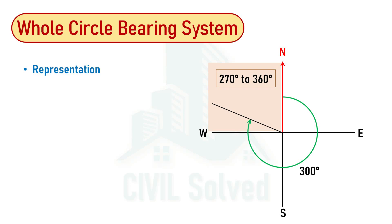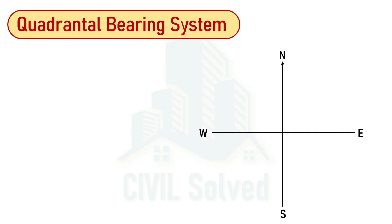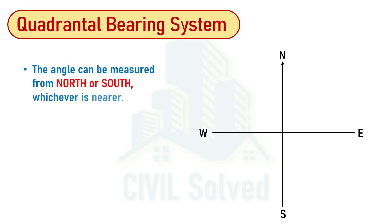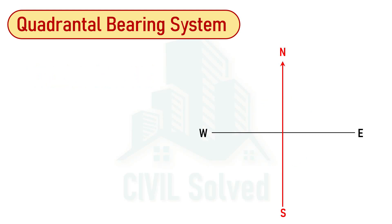Now let's discuss the Quadrantal Bearing system. In the Quadrantal Bearing system, the angle can be measured from north or south, whichever is nearer. So the angle can be measured from north or from south depending upon the location of the line. In the Quadrantal Bearing system, the angle can be measured clockwise or counterclockwise — clockwise from north, clockwise from south, counterclockwise from north, or counterclockwise from south. Therefore, the angle will always range from 0 to 90 degrees.